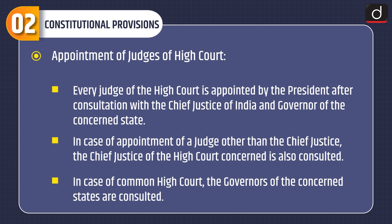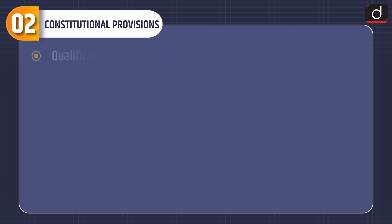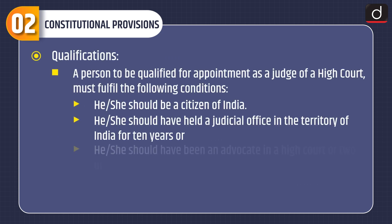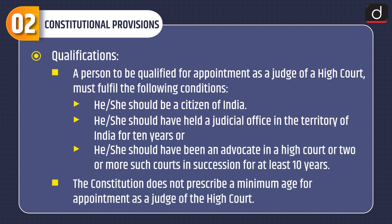A person to be qualified for appointment as a judge of a High Court must fulfill the following conditions: he or she should be a citizen of India; should have held a judicial office in the territory of India for 10 years; or should have been an advocate in a High Court or two or more such courts in succession for at least 10 years. The Constitution does not prescribe a minimum age for appointment as a judge of the High Court.